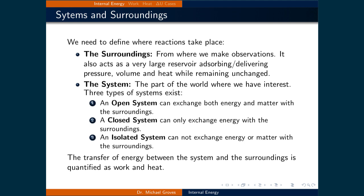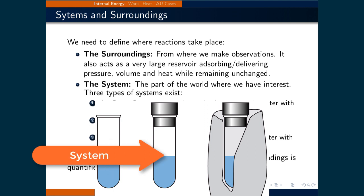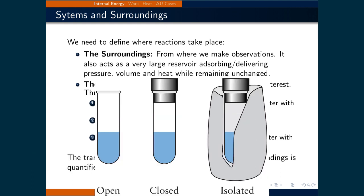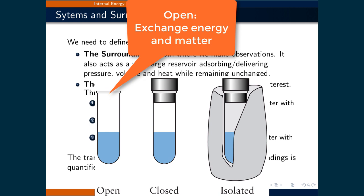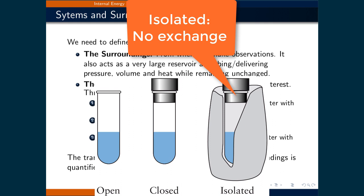We also need to define where reactions take place. The surroundings is where we make observations from; it also acts as a very large reservoir, absorbing or delivering pressure, volume, heat, and work while remaining unchanged. The system is the part of the world where we have interest — where the chemistry is taking place. There are three types of systems: an open system, which can exchange both energy and matter with the surroundings; a closed system, which can only exchange energy with the surroundings; and an isolated system, which cannot exchange energy or matter with the surroundings. Recall that the first law of thermodynamics refers to an isolated system.